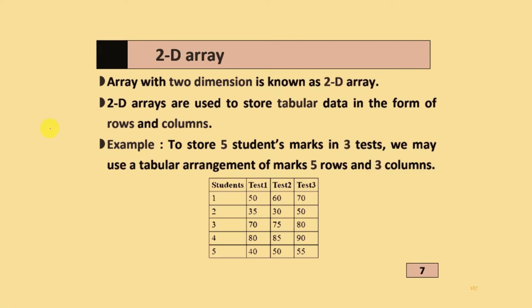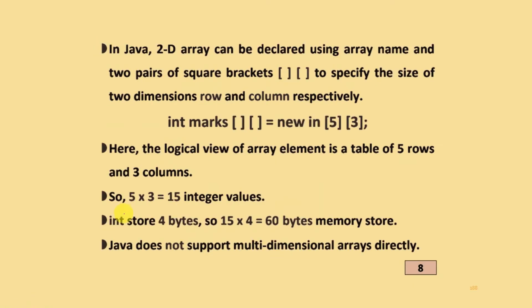Second topic: two dimension array. Array with two dimensions is known as 2D array. 2D arrays are used to store tabular data in the form of rows and columns. Example is given to store five students marks in three tests. We make use of tabular arrangement: five rows and three columns.